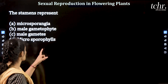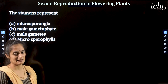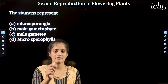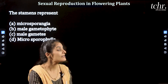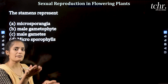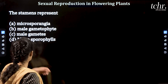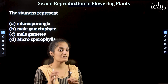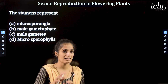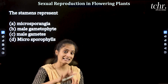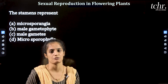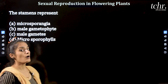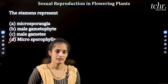Stamen represents the male gametophyte. The part of the stamen having male gametes is the anther. The stamen is actually the microsporophyll — the structure in which male gamete reproductive structures are formed.